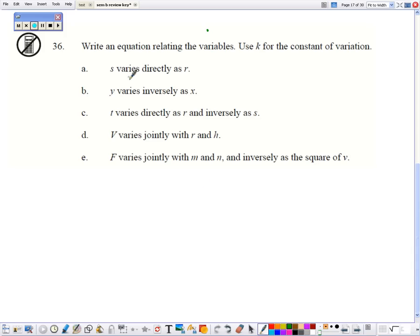Okay, so for varies directly, s equals k times r. Now you could also isolate the k, and s divided by r equals k is also a correct answer.